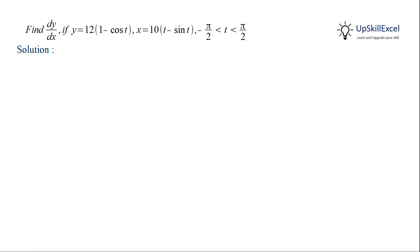Given two parametric functions x and y in terms of t, find dy by dx. Over the given domain of minus pi by 2 to pi by 2, both sin t and cos t are very well defined, and hence x and y are also defined.